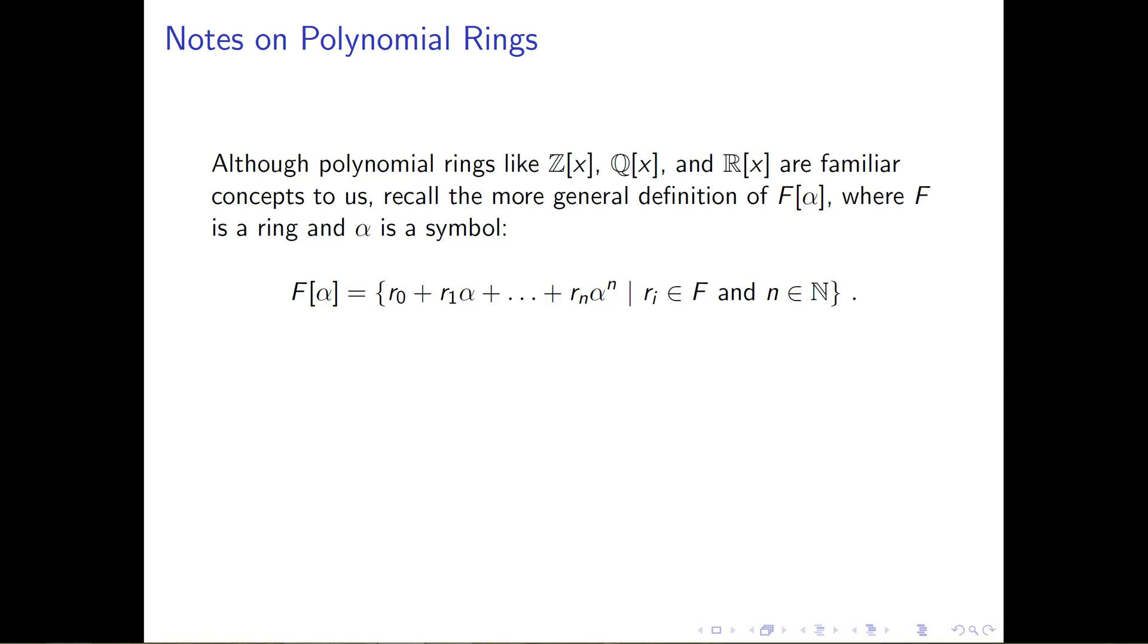Polynomial rings like the integers adjoined x, the rationals adjoined x, or the real numbers adjoined x are very familiar to us. These are things that we've been dealing with mostly since high school. However, we really can make F anything we want it to be. And somewhat the point of some of these earlier slides is to show you that everything still works in the familiar way, even if the ring that we choose for F is not as familiar or as comfortable as something like Z, Q, or R.